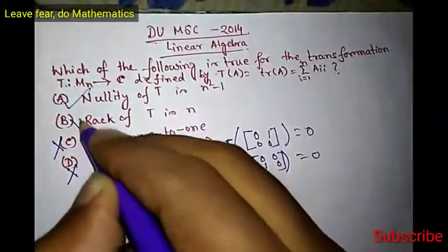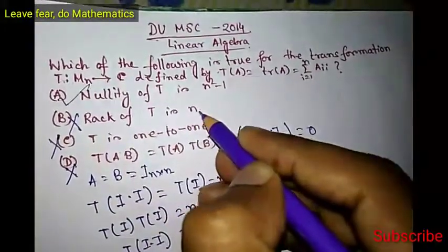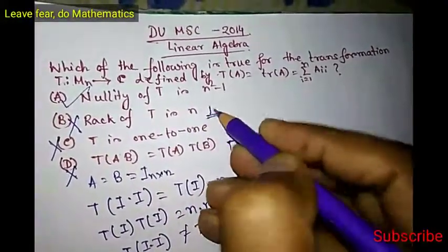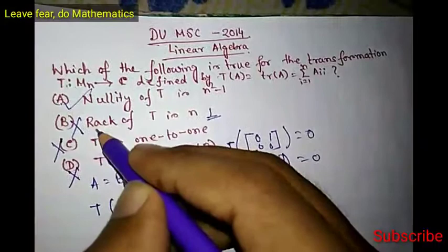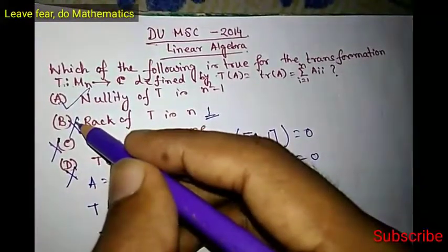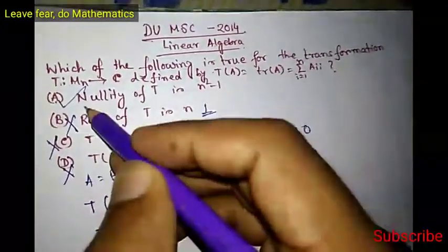So option A is true and option B is false because rank of T cannot be n; rank of T is 1. So option B is false, and as all the options B, C, D are false, option A is true.